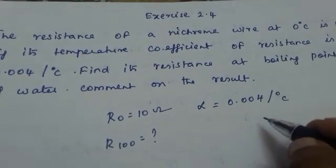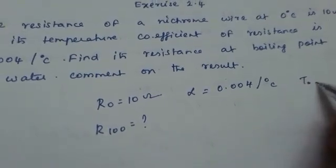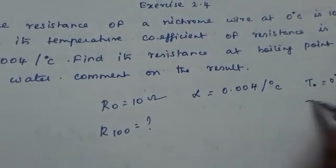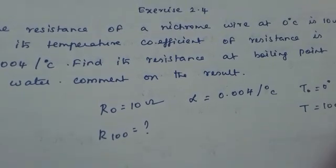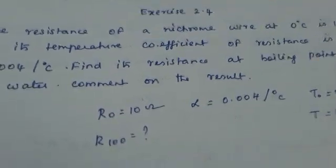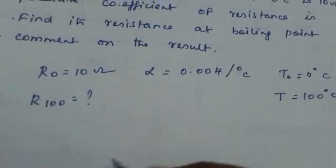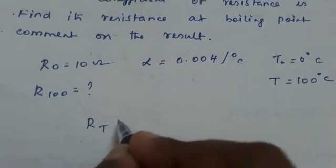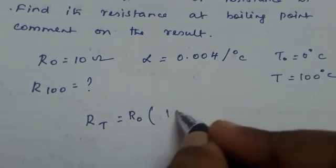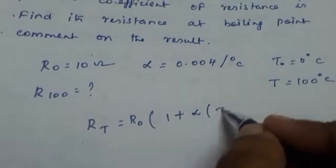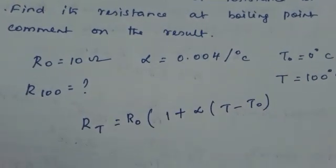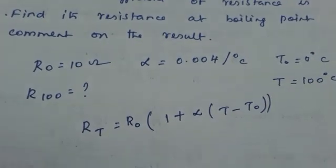What is your T? Your T0 is equal to 0 degrees centigrade and your T is 100 degrees centigrade. Now we have to use the formula. RT is equal to R0 into 1 plus alpha into T minus T0. This is the formula we are going to use.